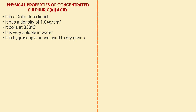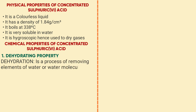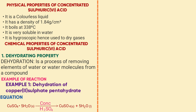Chemical properties of concentrated sulfuric acid include, firstly, the dehydrating property. Dehydration is a process of removing water molecules or elements of water from a compound. A dehydrating agent is a substance capable of removing chemically combined water or elements of water from a compound. An example where sulfuric acid acts as a dehydrating agent: hydrated copper sulfate — CuSO₄·5H₂O + concentrated H₂SO₄ → CuSO₄ (anhydrous) + 5H₂O.